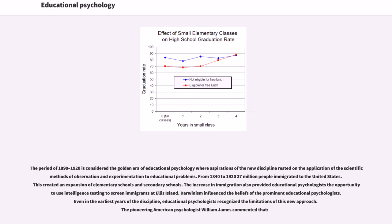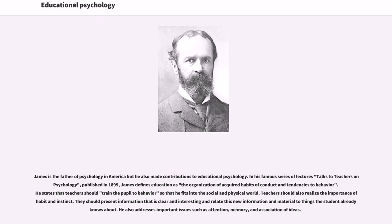The period of 1890–1920 is considered the golden era of educational psychology, where aspirations of the new discipline rested on the application of scientific methods of observation and experimentation to educational problems. From 1840 to 1920–1930, 37 million people immigrated to the United States, creating an expansion of elementary and secondary schools. This also provided educational psychologists the opportunity to use intelligence testing to screen immigrants at Ellis Island. Darwinism influenced the beliefs of prominent educational psychologists.